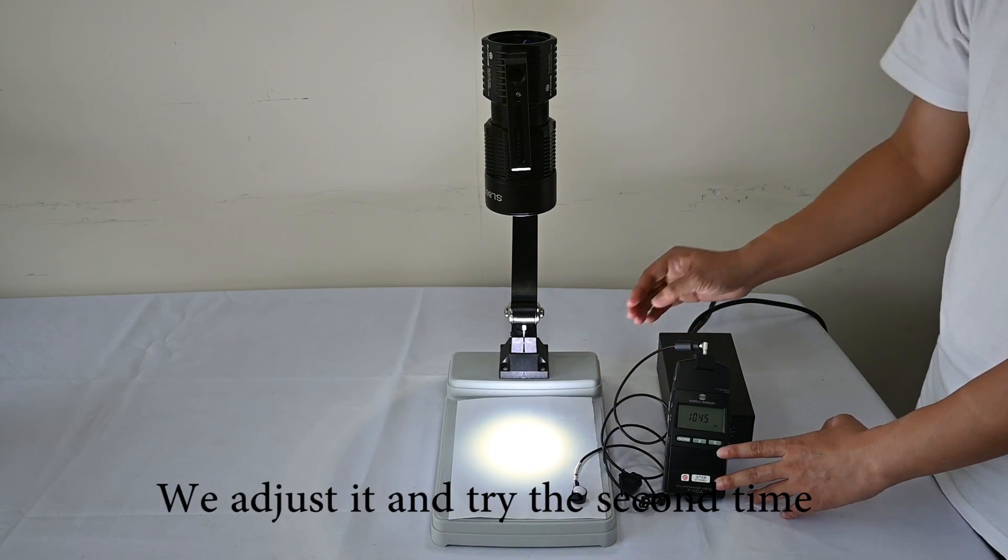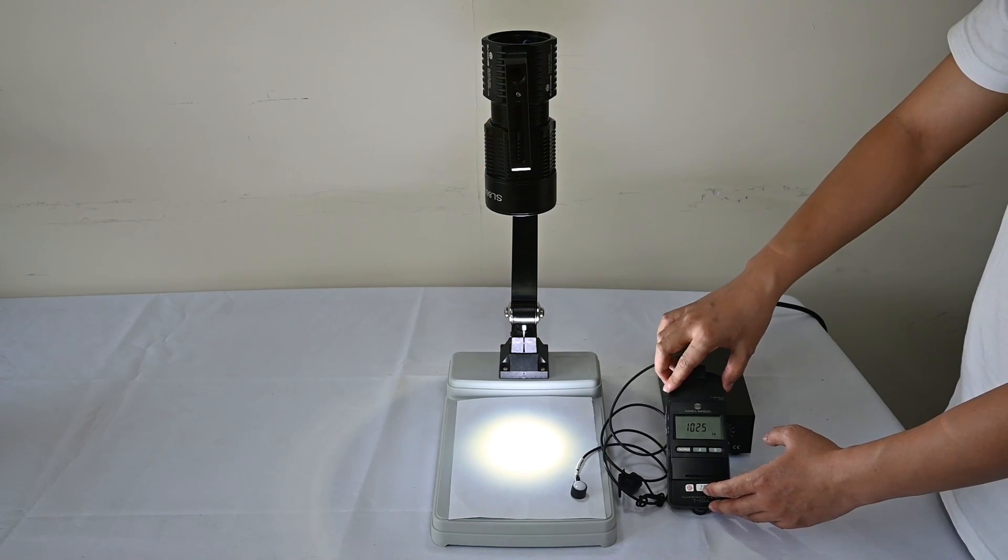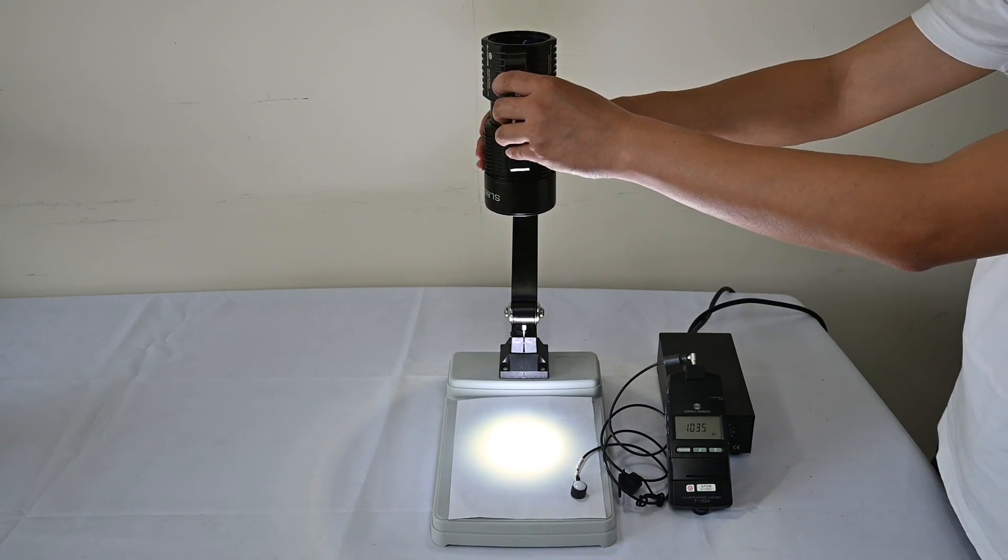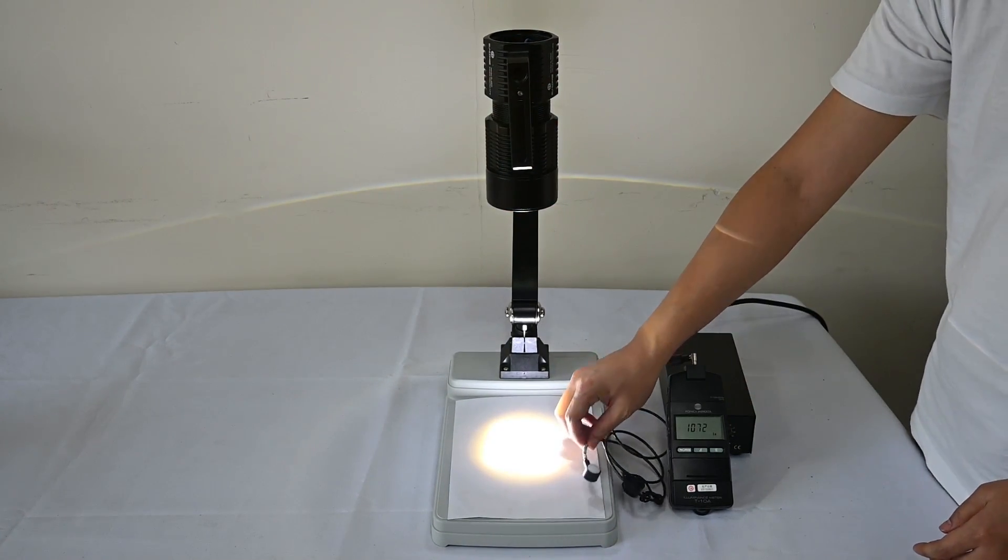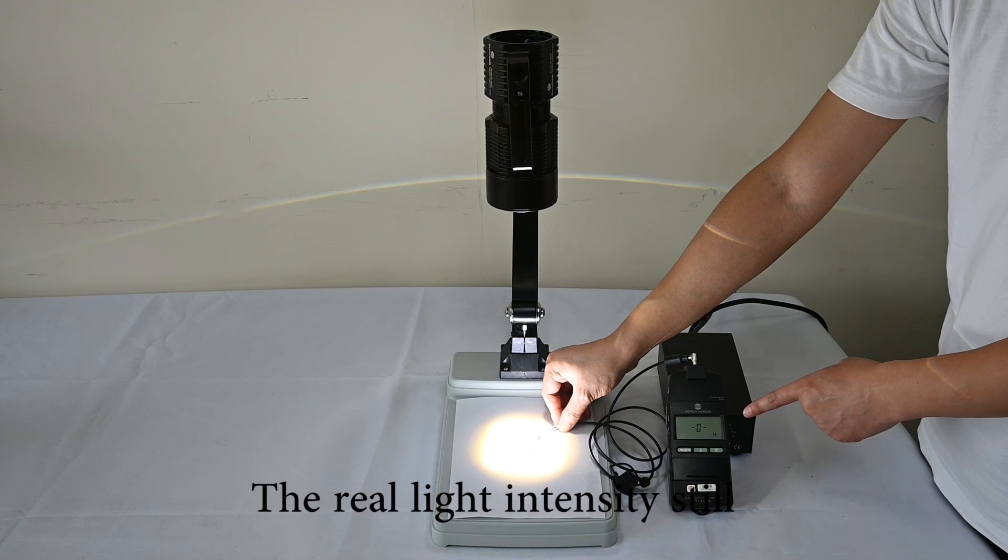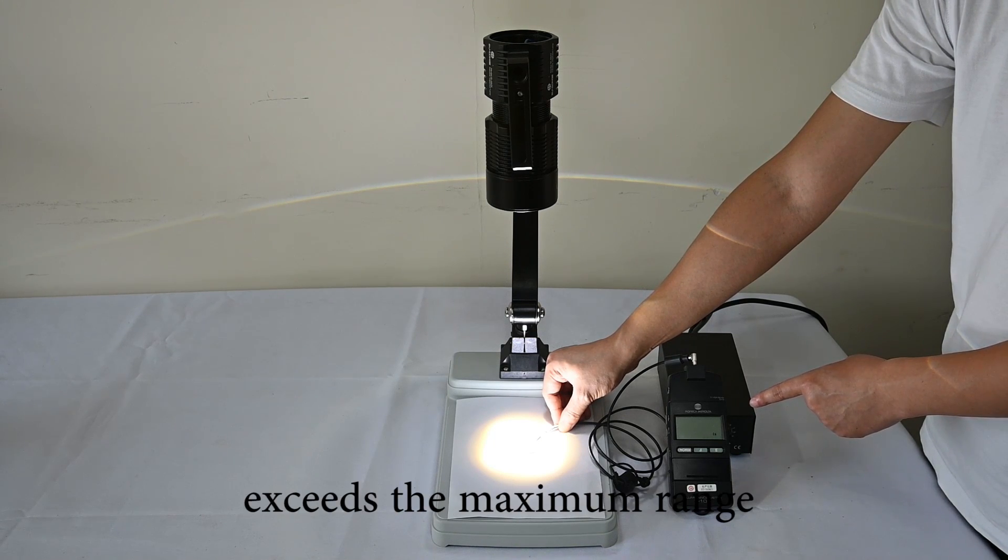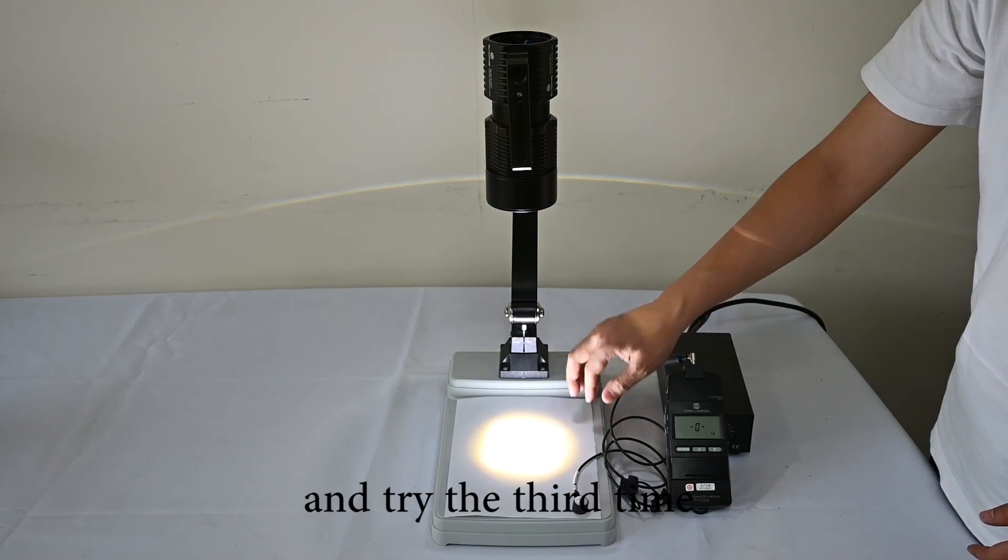We will adjust it and try the second time. You see, the real light intensity still exceeds the maximum range. OK, we will adjust the dimmer dial and try the third time.